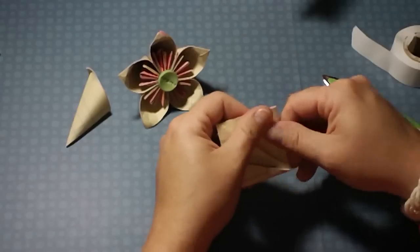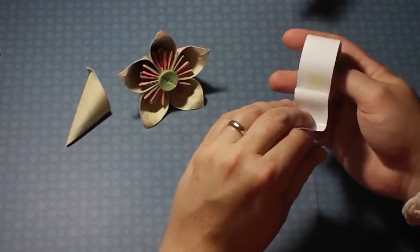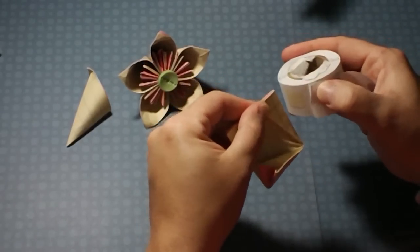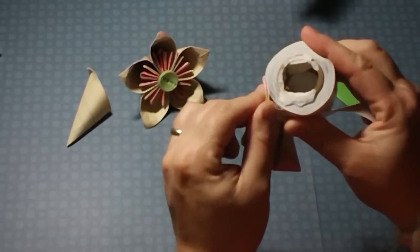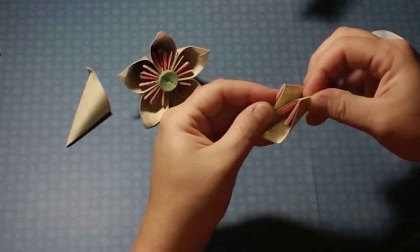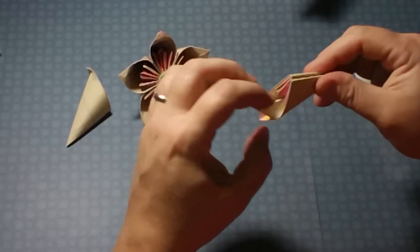We're going to glue that right there. Use a nice strong pop dot or glue dot, like extreme squares from glue arts. Let's get that on there real good. One pretty much holds it, so just line up our edges when we glue it together.